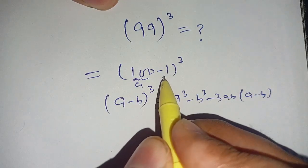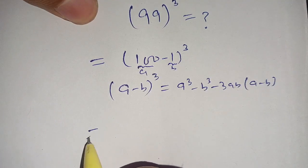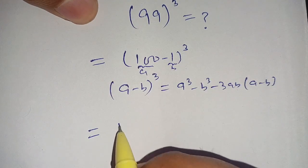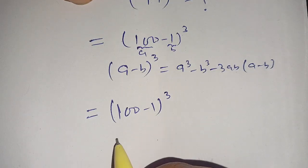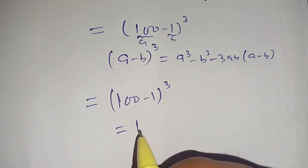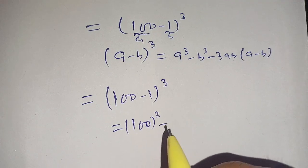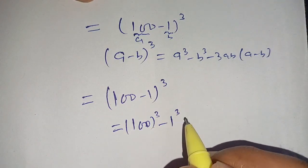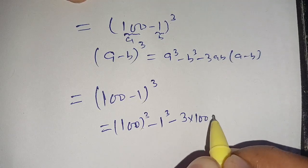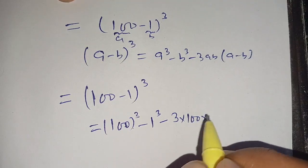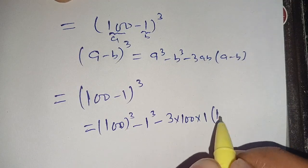Here we consider a is equal to 100 and b is equal to 1. Using this identity, (100 minus 1) whole cube equals a cube — that is 100 cube — minus b cube — that is 1 cube — minus 3 times a (100) times b (1) times (a minus b), which is (100 minus 1).